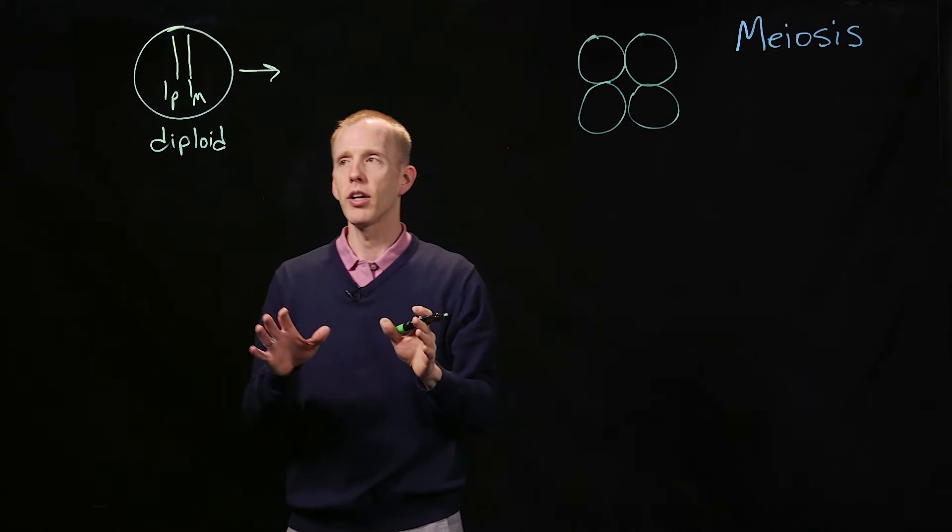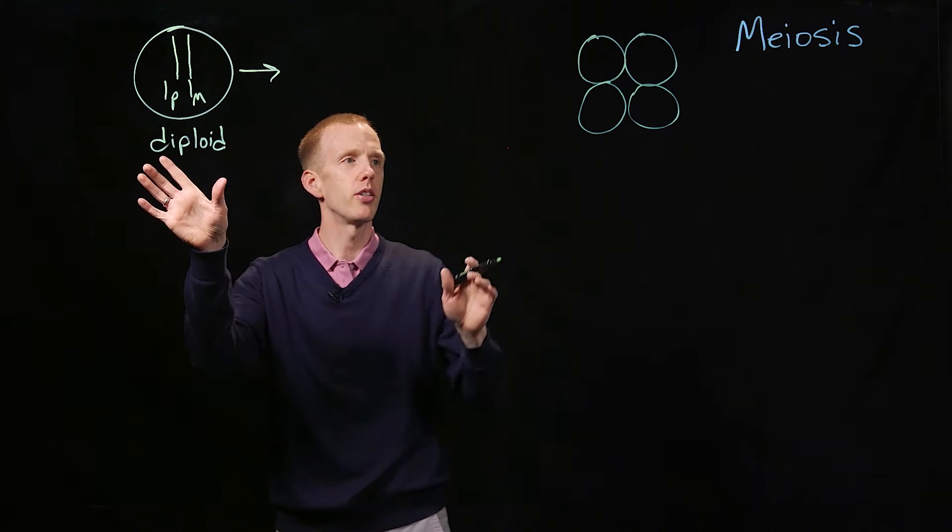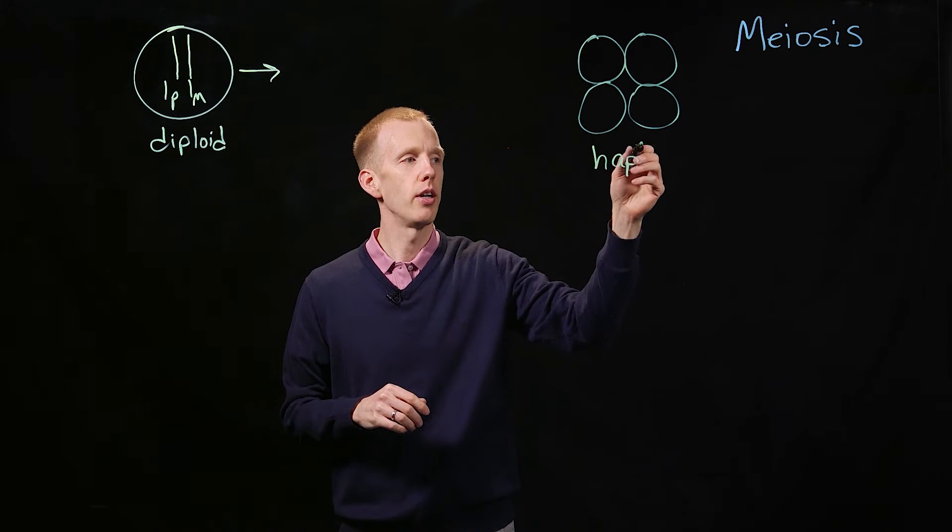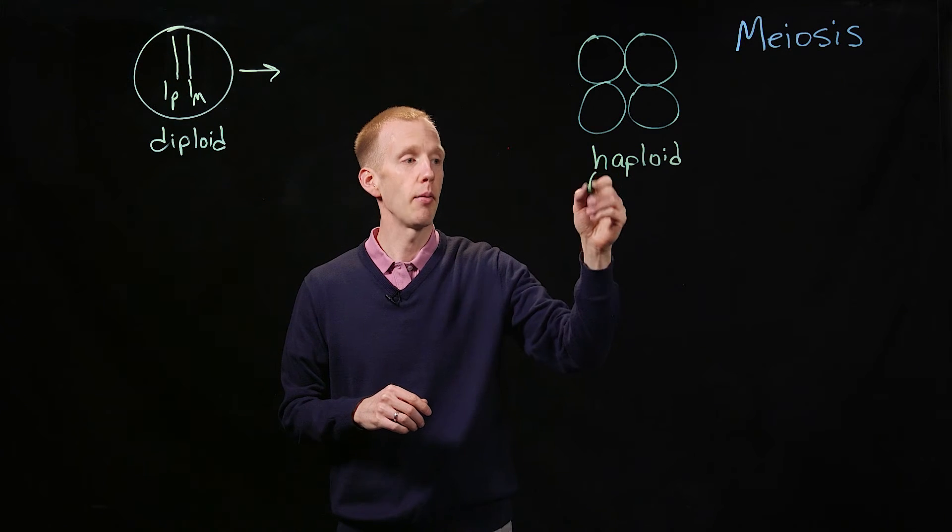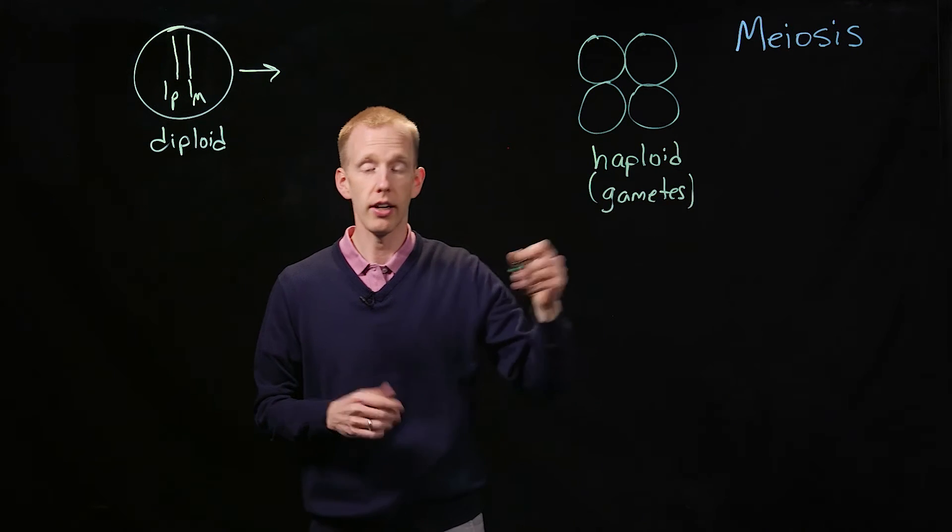And you probably already understand that the process of meiosis involves taking a diploid cell and producing four haploid cells, the gametes, be it sperm or egg, depending on the sex that you are.